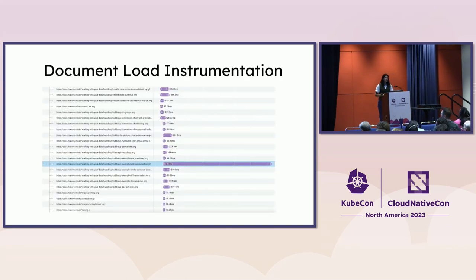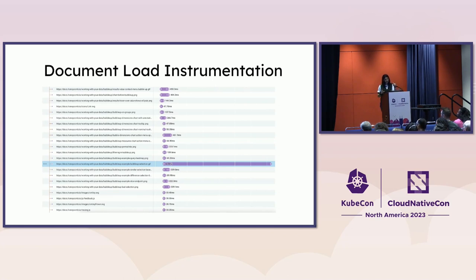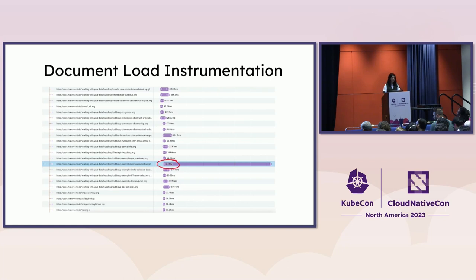There's some auto-instrumentation that comes with the setup code. One is document load instrumentation. I spent time talking about how page load information isn't that reliable, but the most exciting part about document load instrumentation is actually the insight it gives you into the resources being loaded onto your page. It'll show you the order your resources were loaded and how long each took. Here you can see a trace from our documentation website — there is a GIF in our bubble-up documentation that takes six seconds to load, so it's probably a good idea to compress that or use a different asset. You can see that at a glance and immediately start debugging.